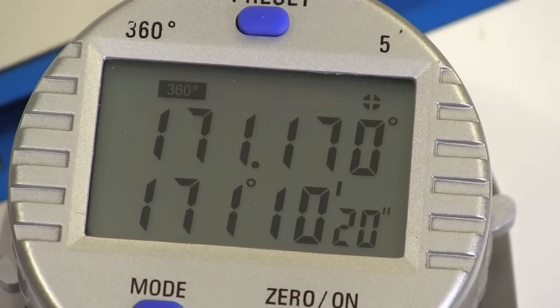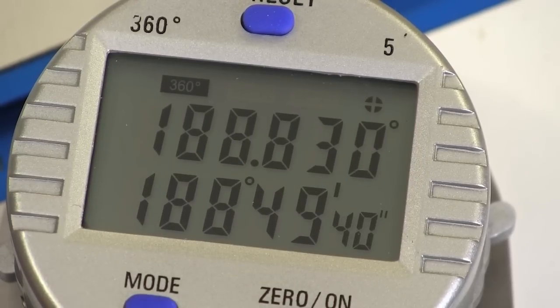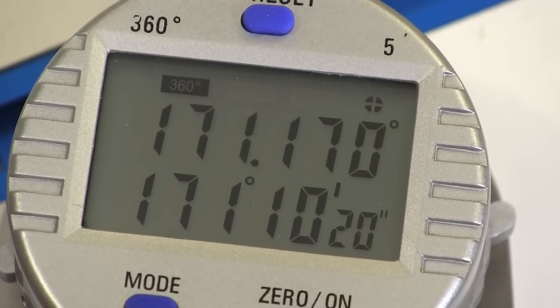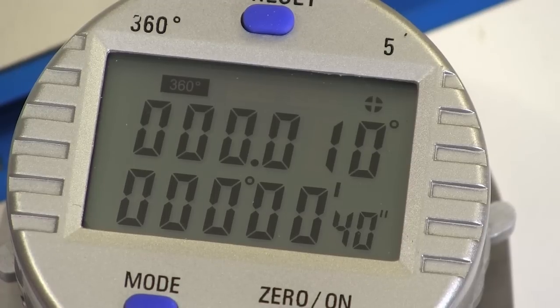The display reads in full degrees across the top, and the bottom line shows you degrees, minutes, and seconds, which is far more accurate when you need to be ultra precise. That bottom scale is going to make it easier for you.